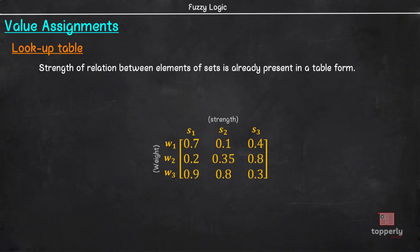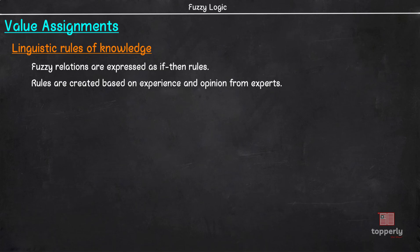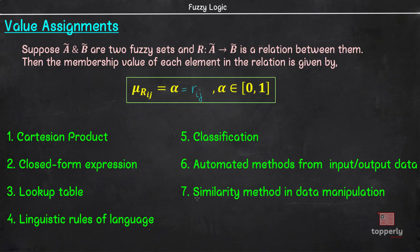Next is linguistic rules of knowledge. In this case, fuzzy relations are expressed as if-then rules. These rules are created based on experience and opinions from experts. We will learn this method in detail in a later video. Similarly, we will learn about classification and automated methods later through this lecture series.